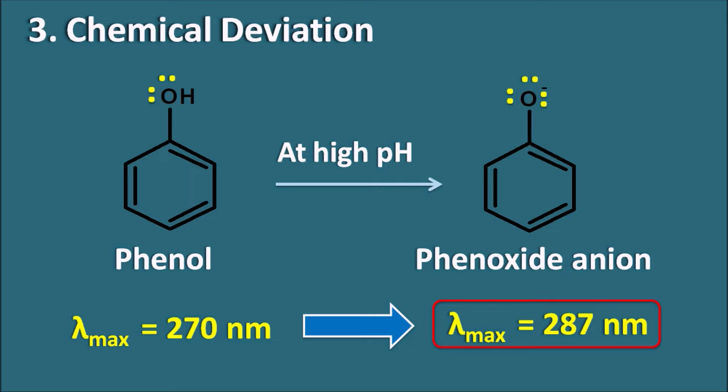In summary, deviations from the Beer-Lambert law can be real, spectral, or chemical. Real deviation is due to high concentration of the analyte. Spectral deviation is due to polychromatic radiation or stray radiation. Chemical deviation is mainly from association, dissociation, or change in pH. Thank you for watching — if you liked this video, please subscribe to our channel, share it with your friends, and post your comments in the comment box.